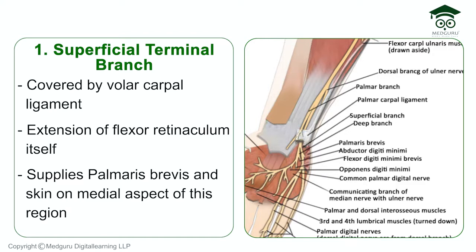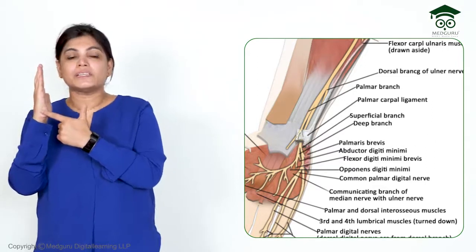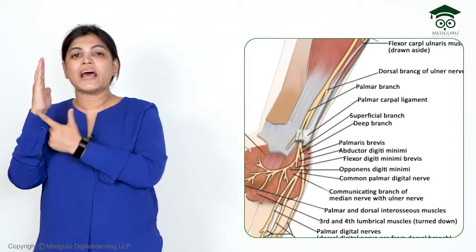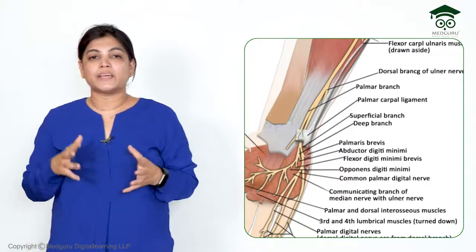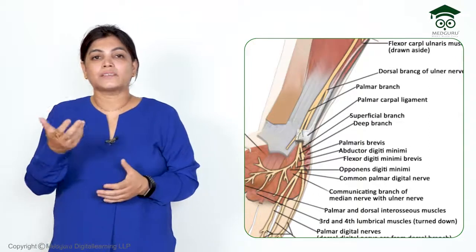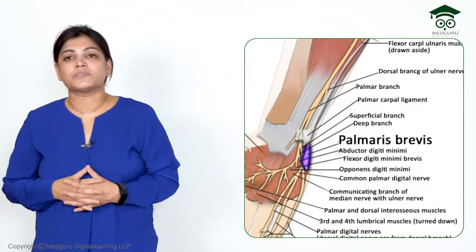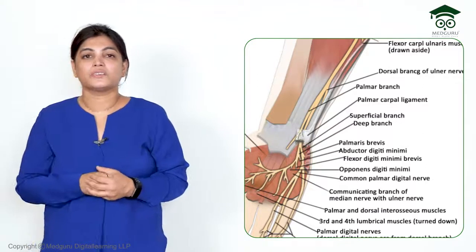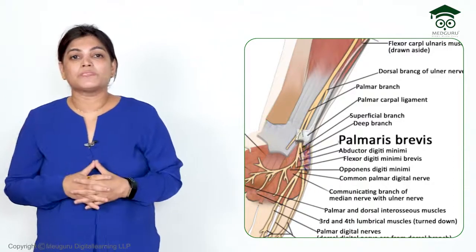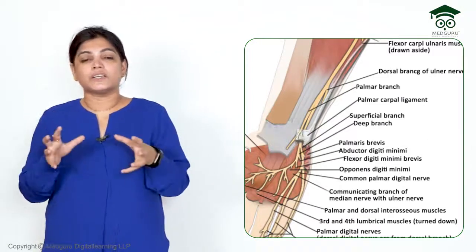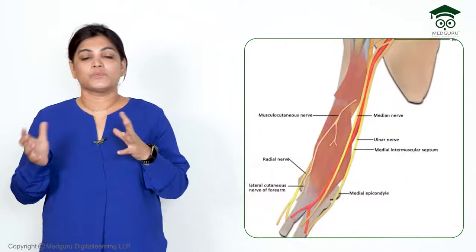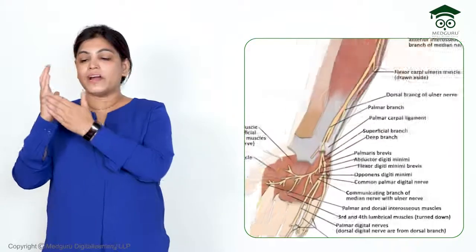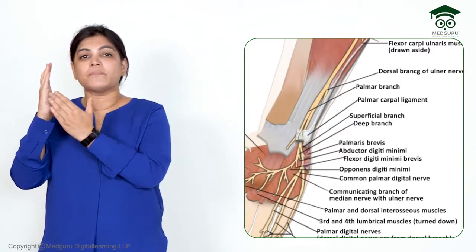The superficial terminal branch of the ulnar nerve supplies the palmaris brevis muscle and the skin on the medial aspect of the hand. The palmaris brevis inserts into the skin of the medial aspect of the hand, making it an example of a panniculus carnosus muscle — muscles that insert into the skin superficially.